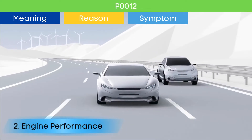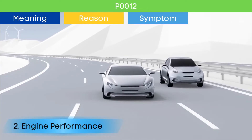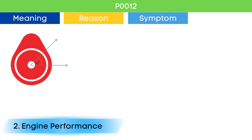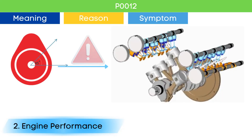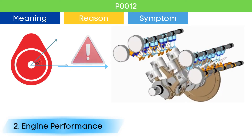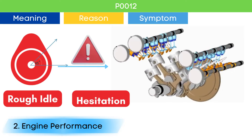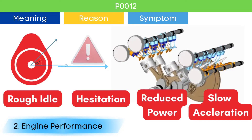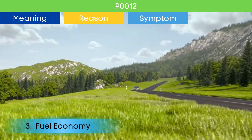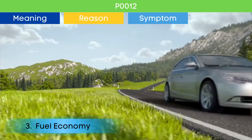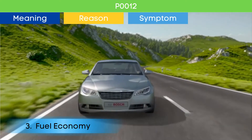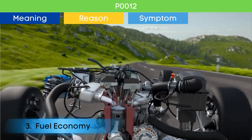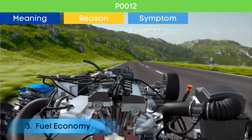Symptom number two: poor engine performance. Problems in the cam position actuator circuit can lead to incorrect cylinder valves opening and closing. This can manifest as rough idle, hesitation, reduced power, and sluggish acceleration. Symptom number three: decreased fuel efficiency. Wrong valve opening and closing due to P0012 lead to incomplete combustion of fuel, which leads to poor fuel economy.